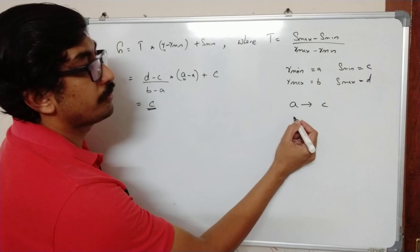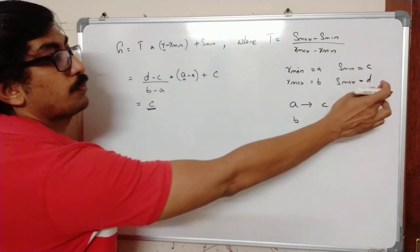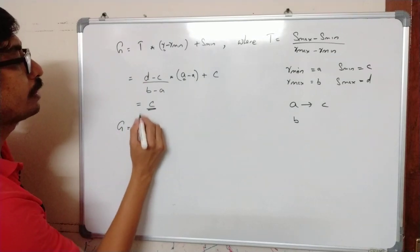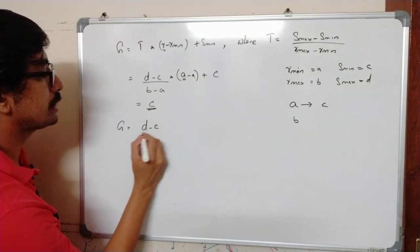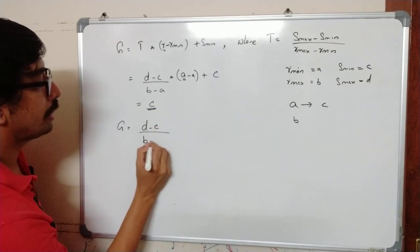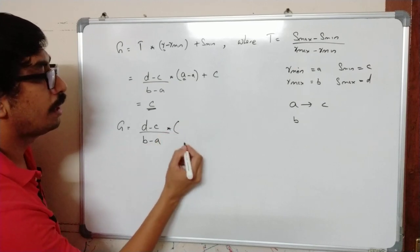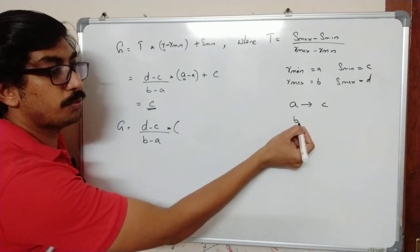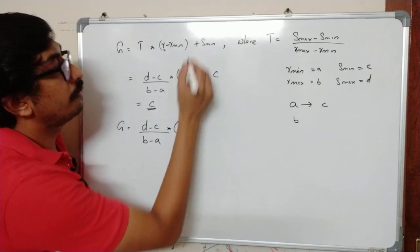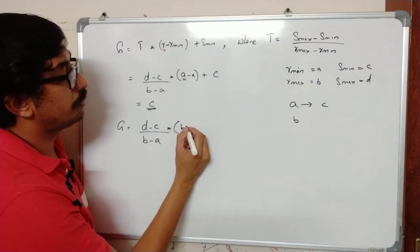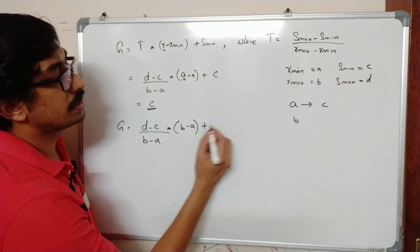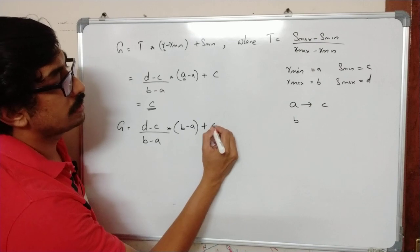So similarly we will find for B and we can check whether we are getting D. So again it will be (S max minus S min) by (R max minus R min) into R, the value of interest. So currently we are going to find out B. So R will be B and R min will be minus A plus S min is C.